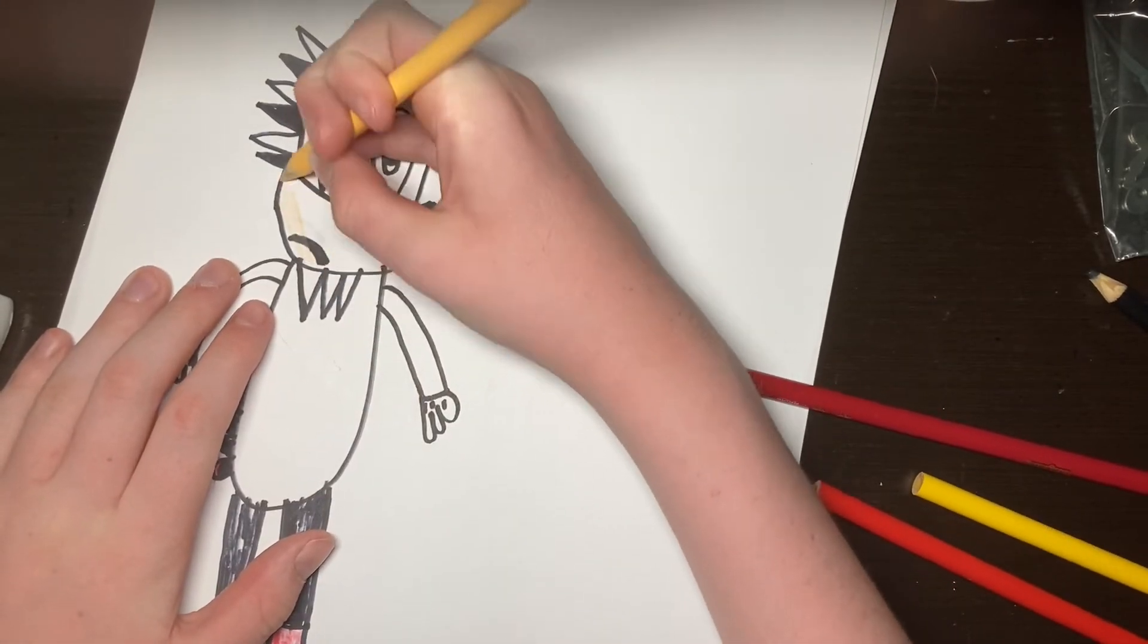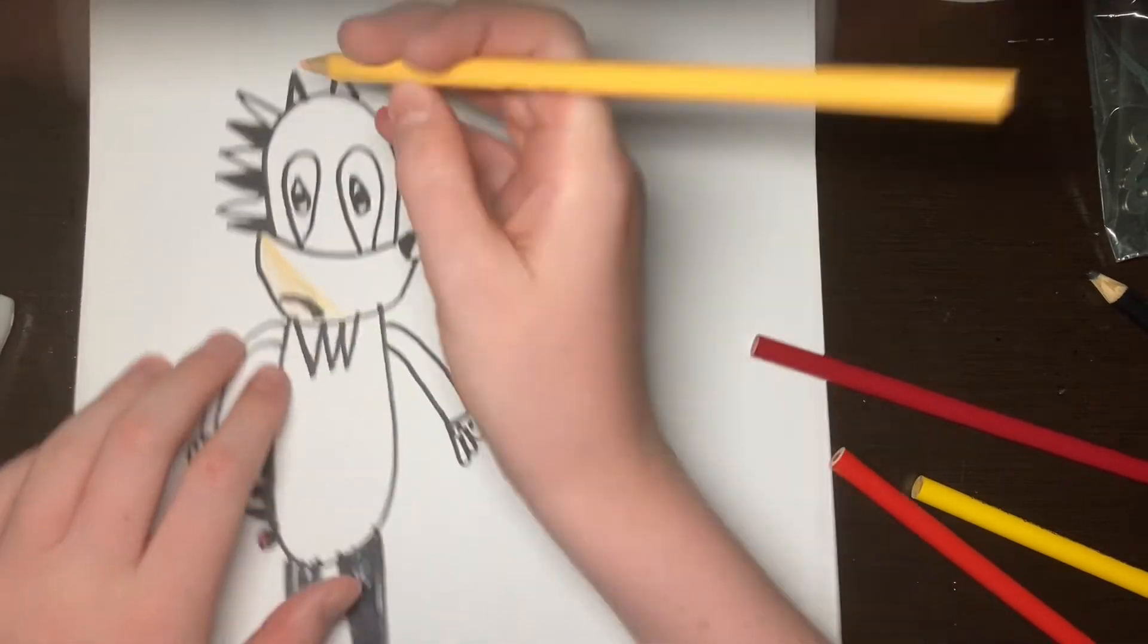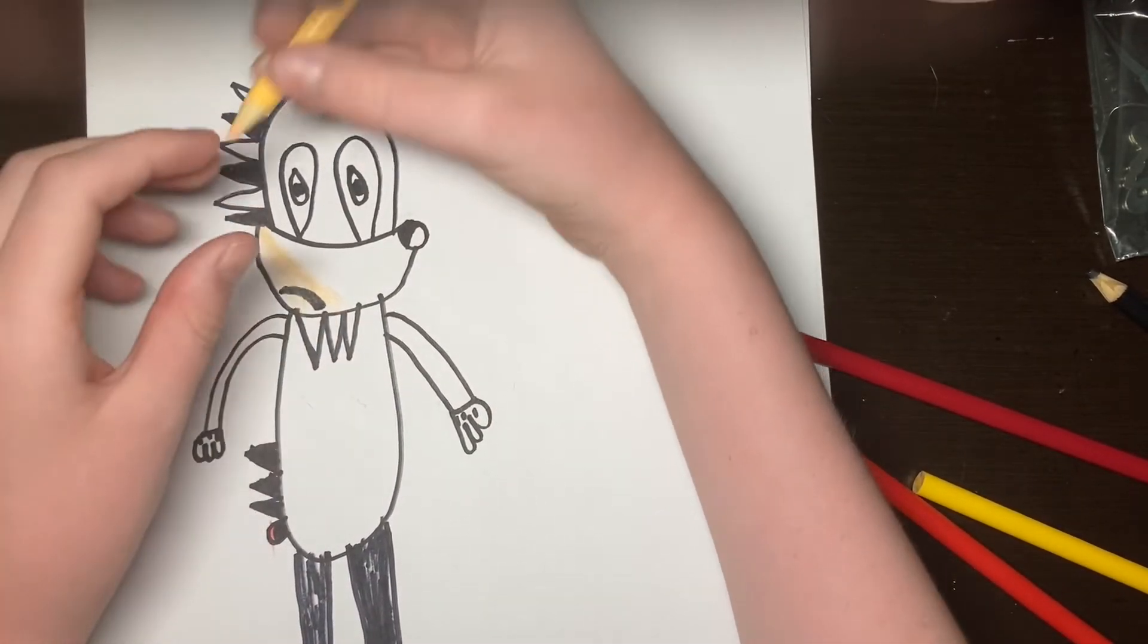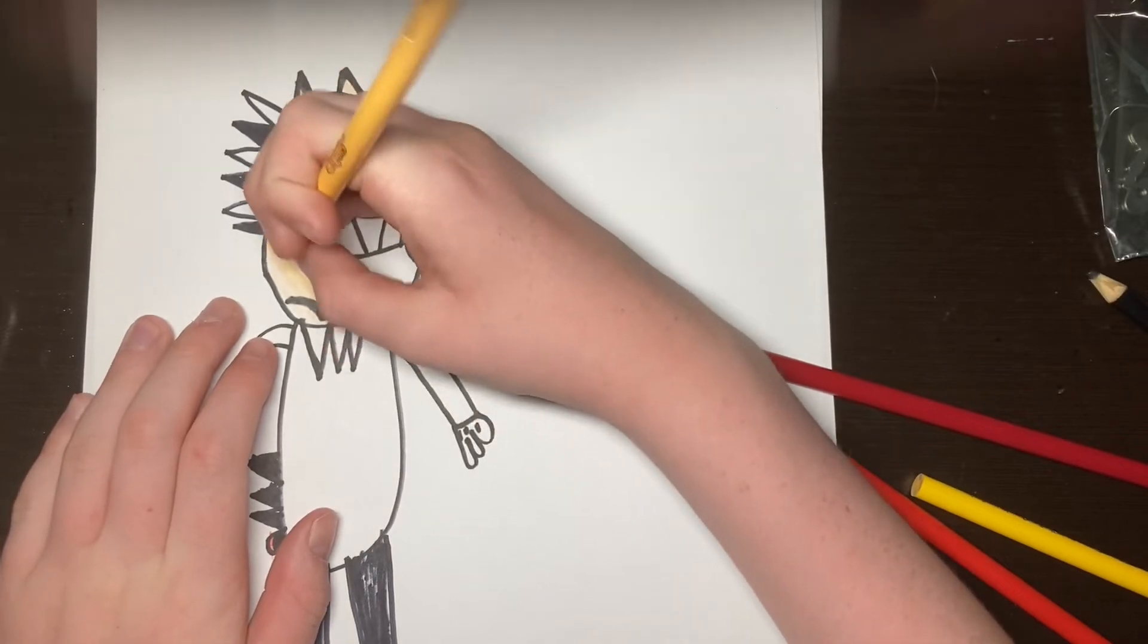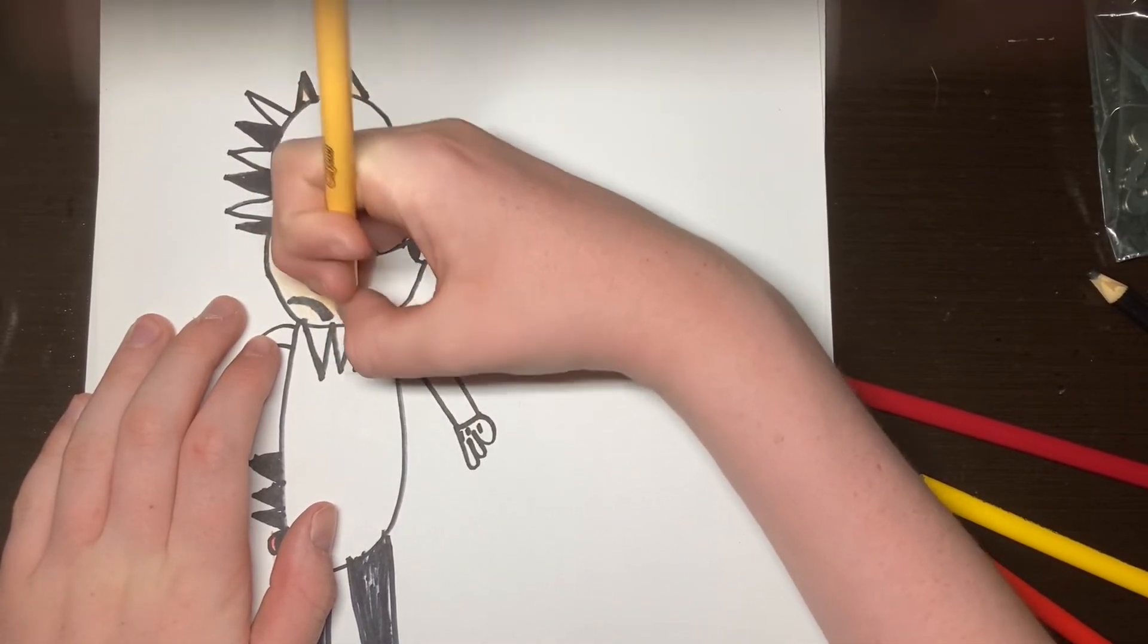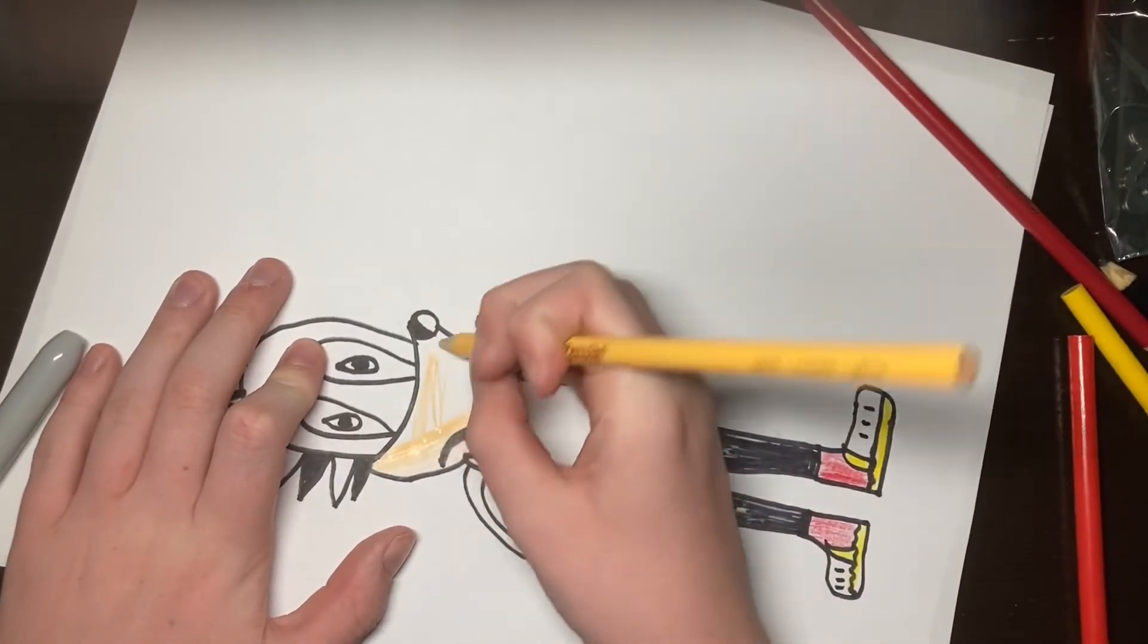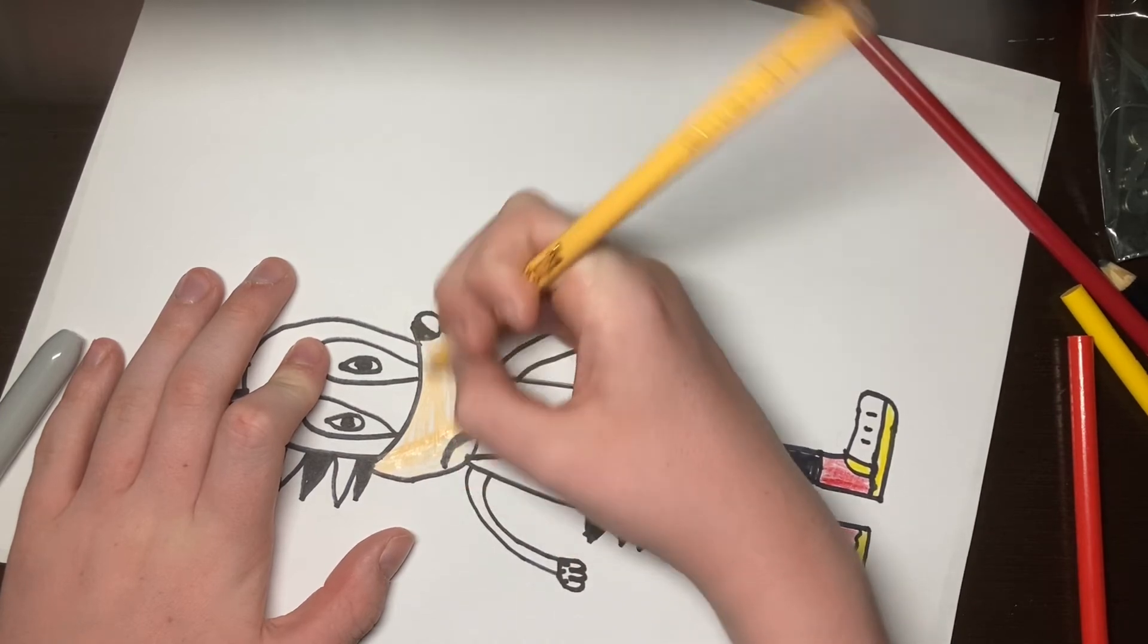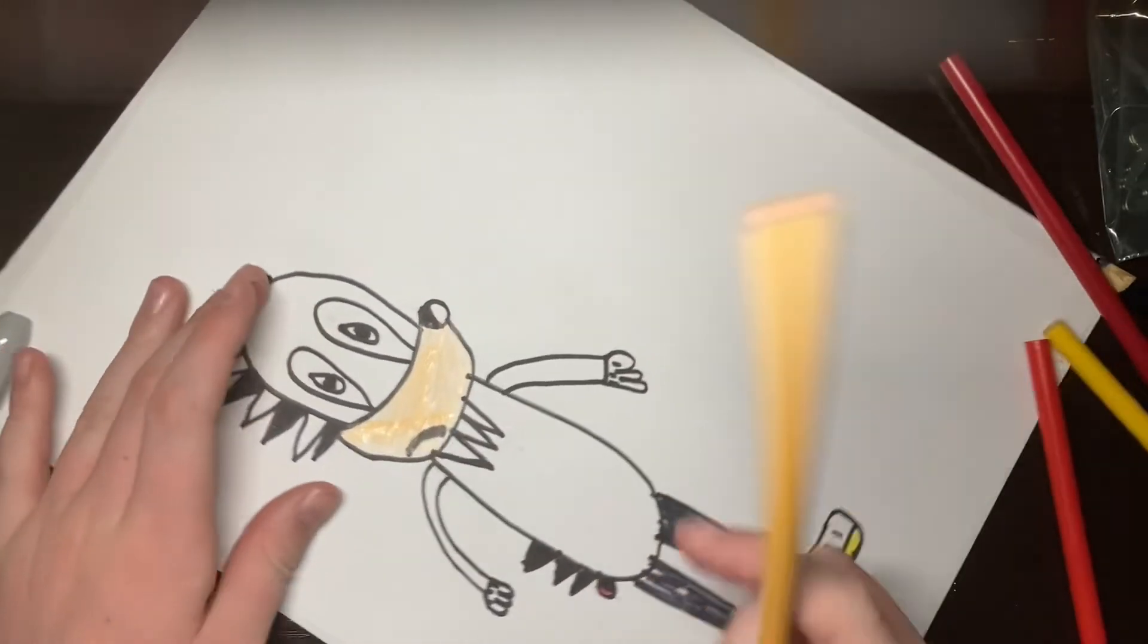We color in his mouth tan. There's also his ears. Like this. Color it in.